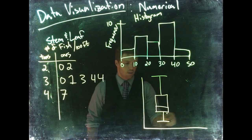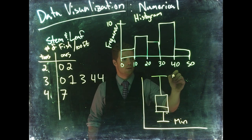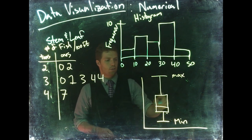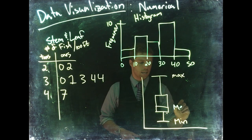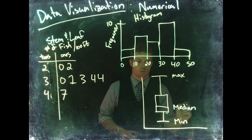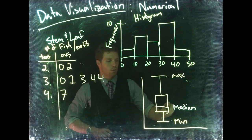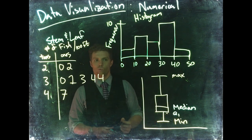What are each of these? Let's label these parts. This bottom is our minimum, the top is our maximum, and then in the middle we've got three values.